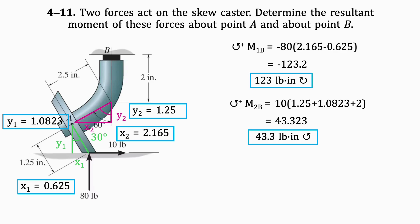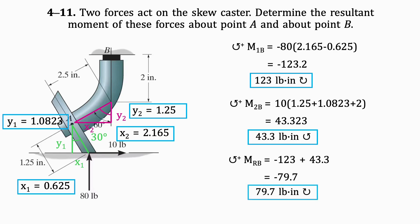To find the resultant moment about B, we will add those two moments together, and the result is 79.7 pound-inches in the clockwise direction. And there you have it. Quick Statics Answers.